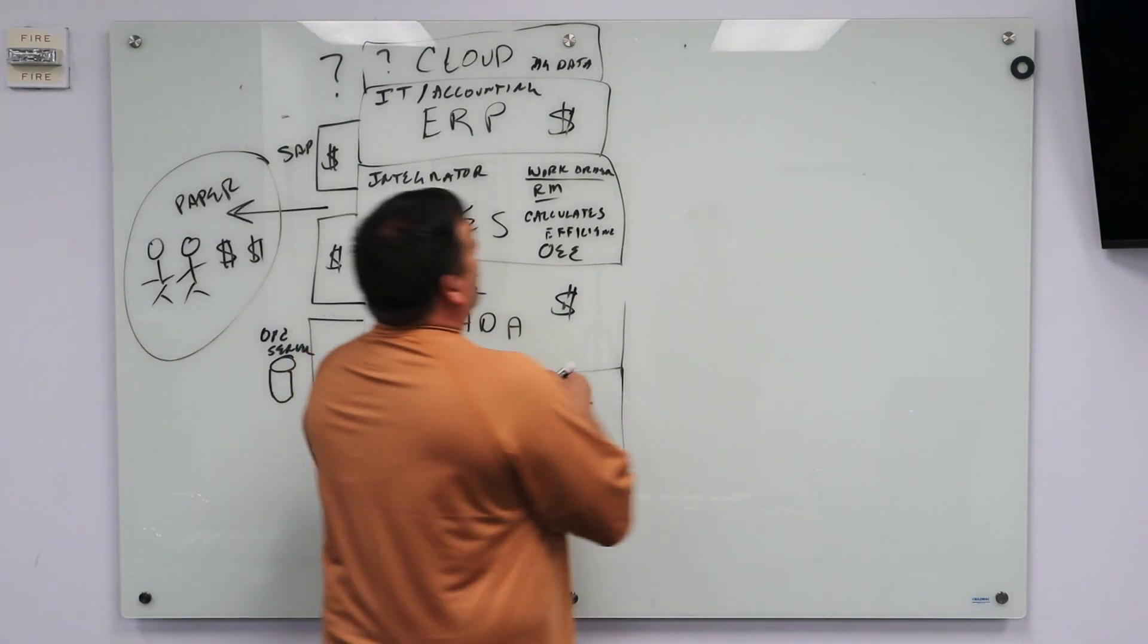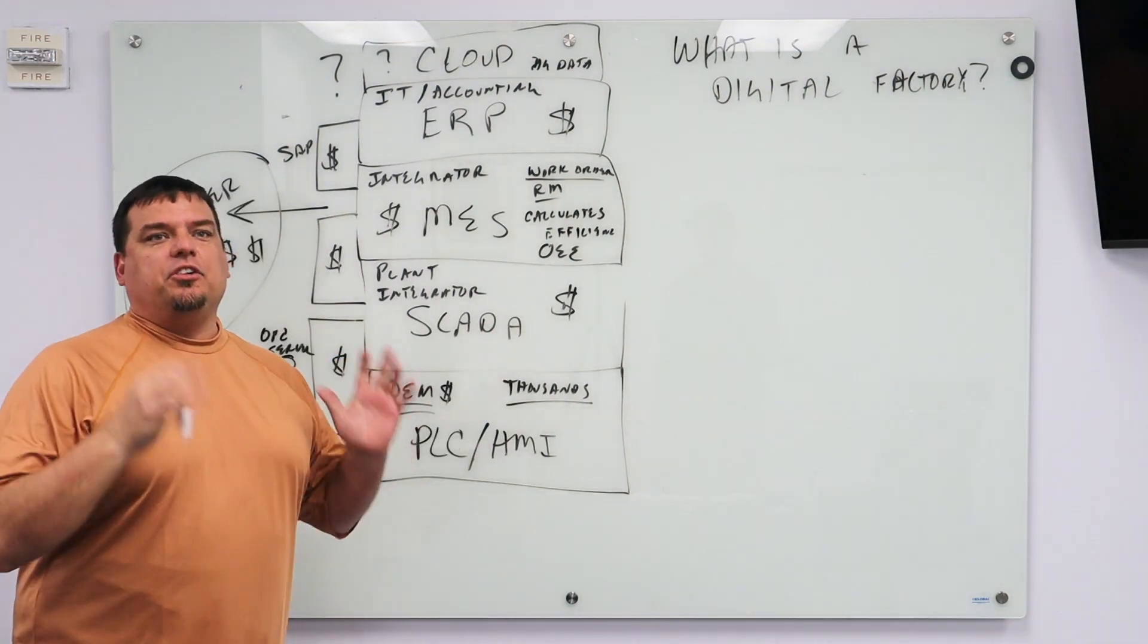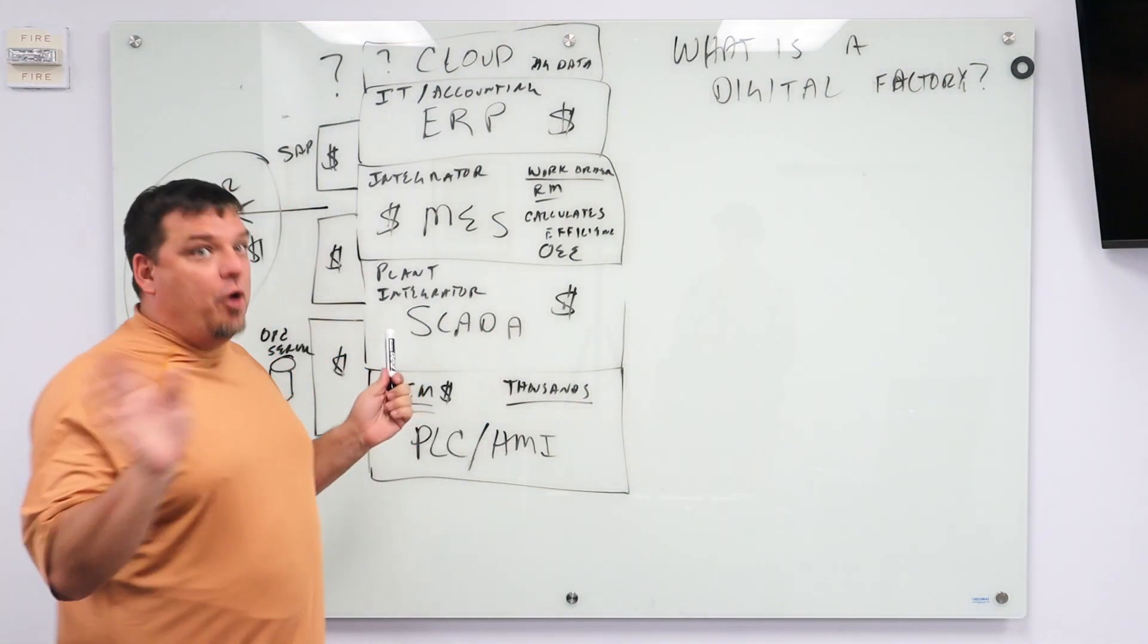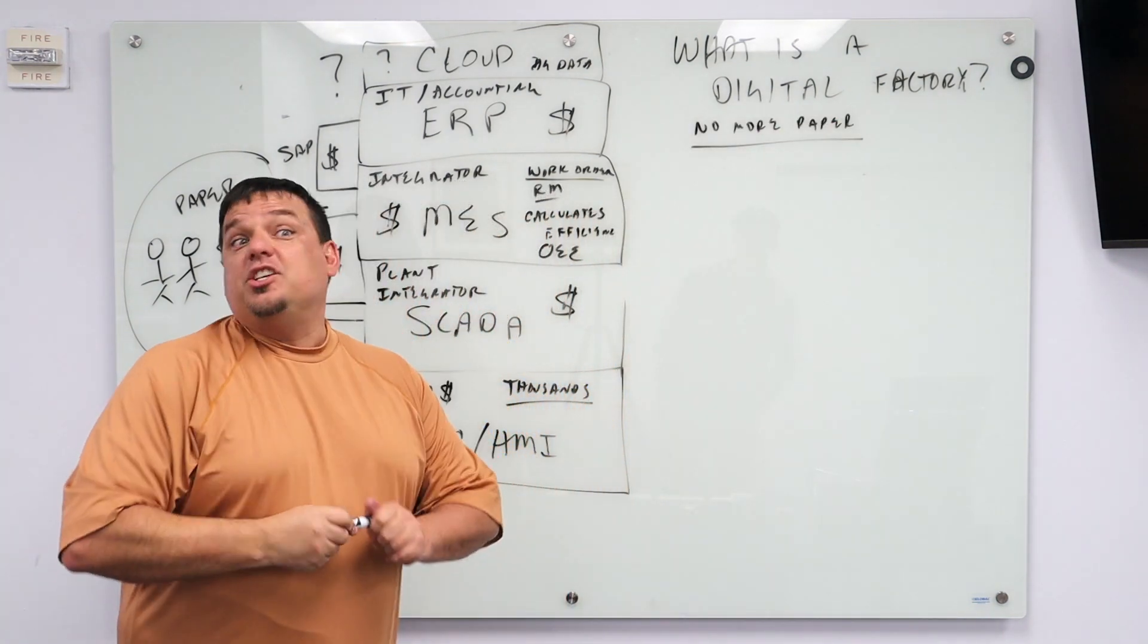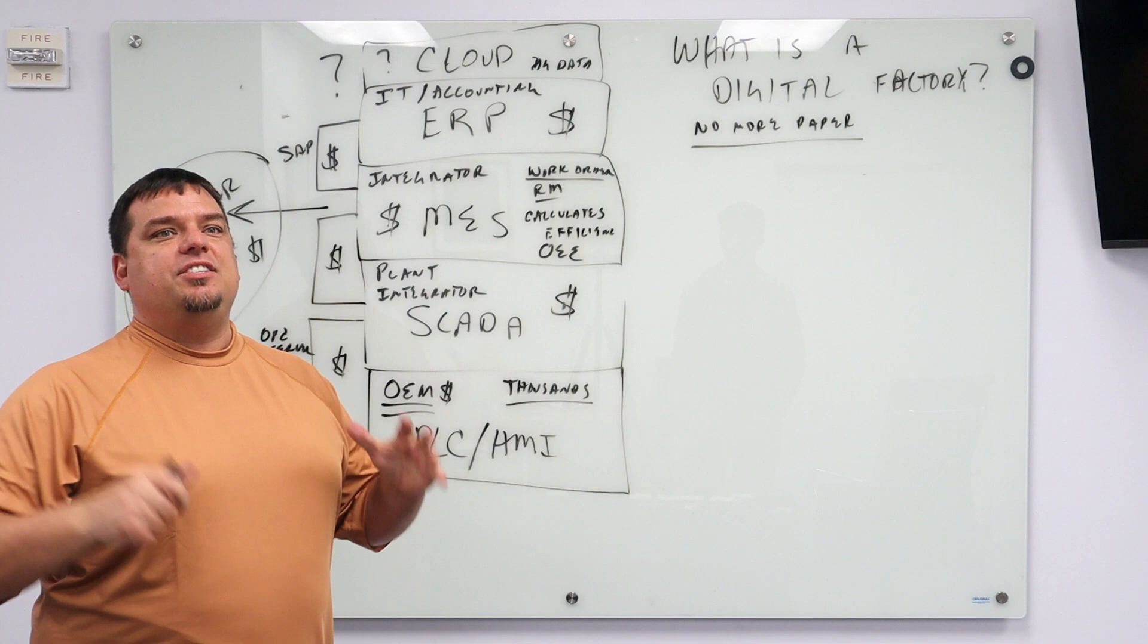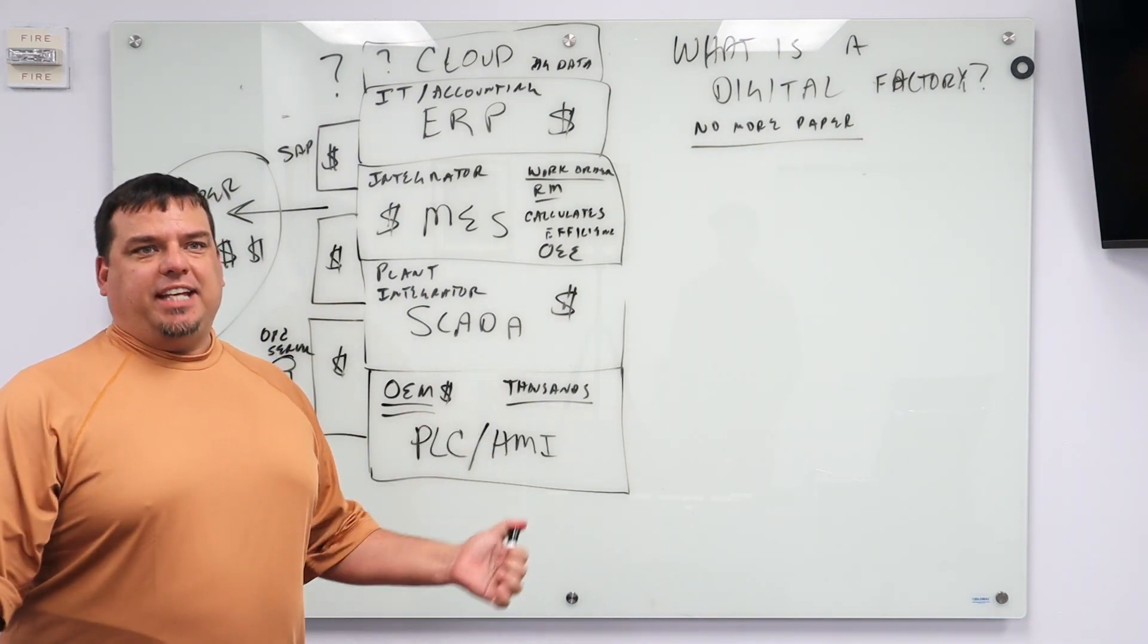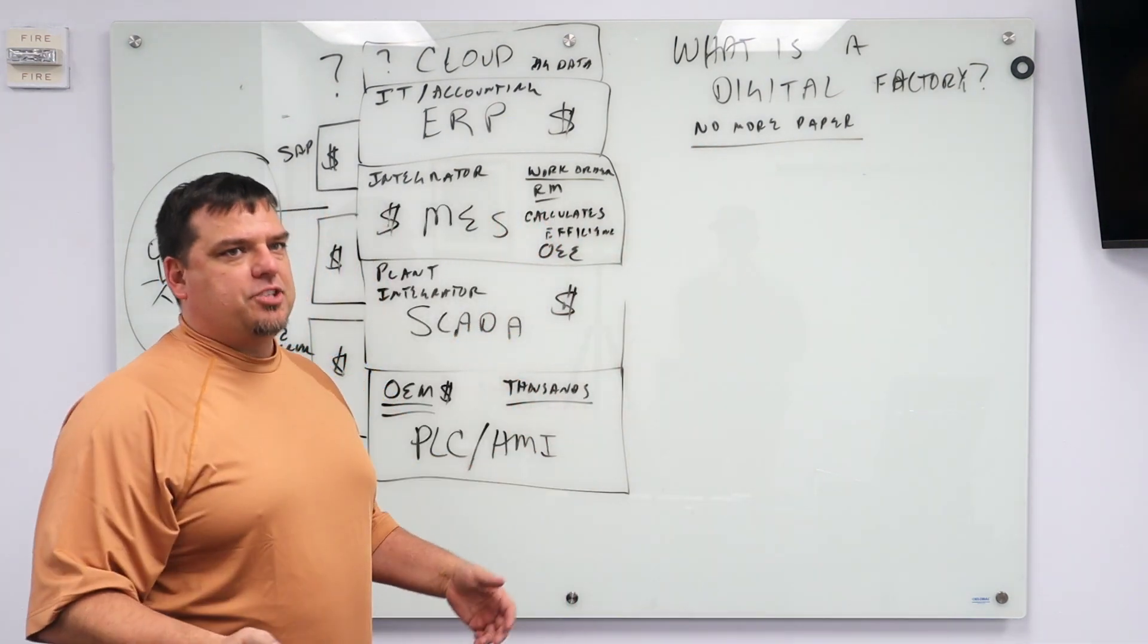All right, so what is the digital factory, or what is a digital factory? At its base level, the digital factory is no more paper. Just no paper at all. This concept of the fourth industrial revolution is essentially the digitization of manufacturing. When the Germans wrote the Industry 4.0 specification, the standard, their idea was let's get rid of paper. That's the fourth industrial revolution.